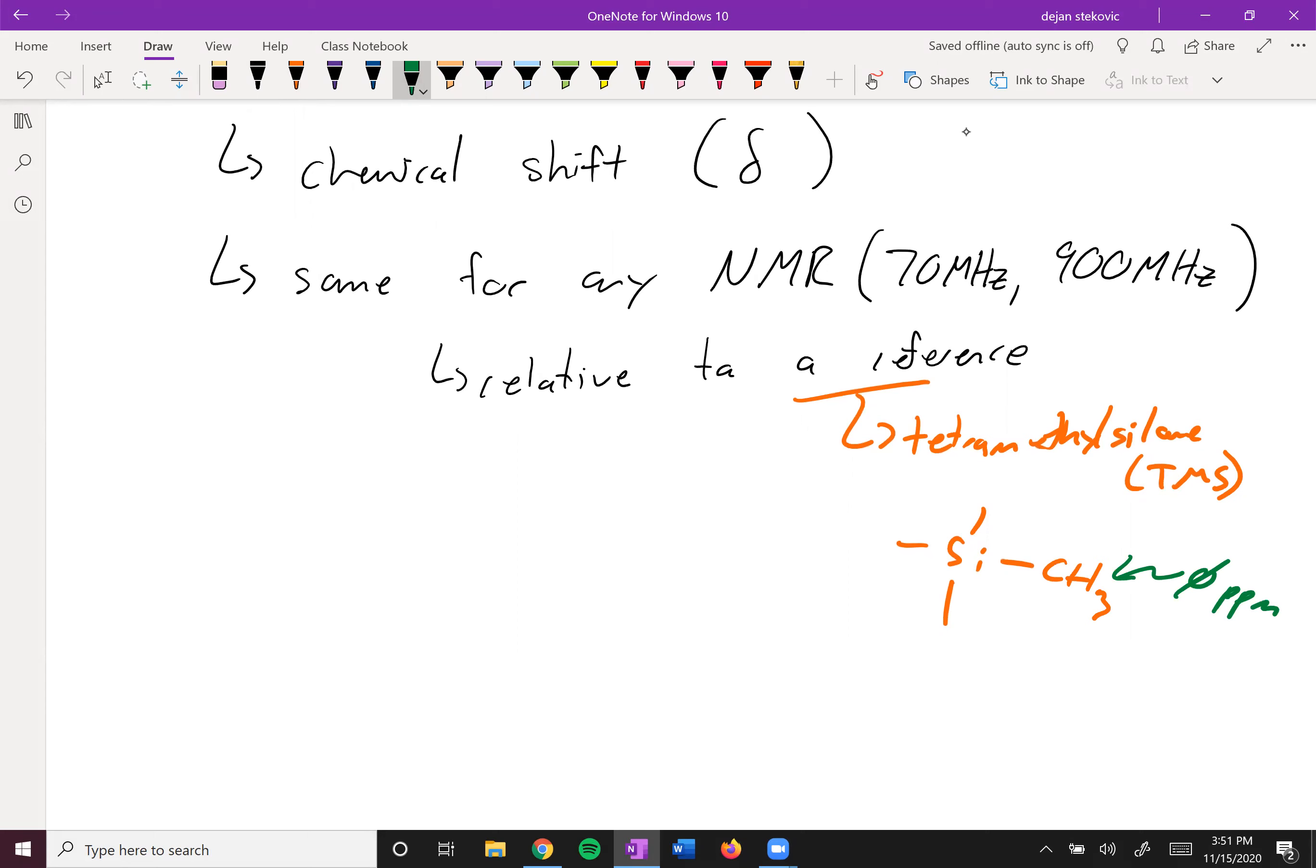And then everything is relative to that. The difference between a 70 and a 900 megahertz is the resolution. If you have a peak for a 70 megahertz NMR, the peak might look like this.